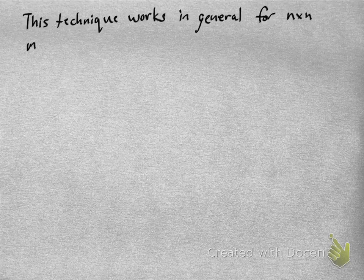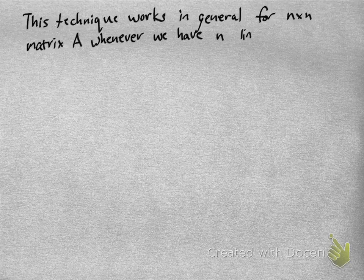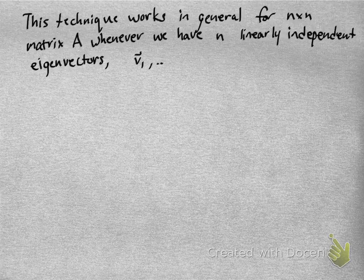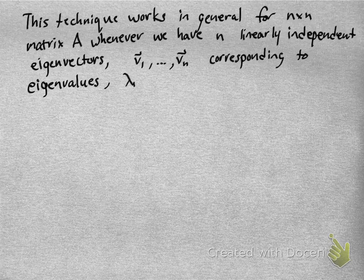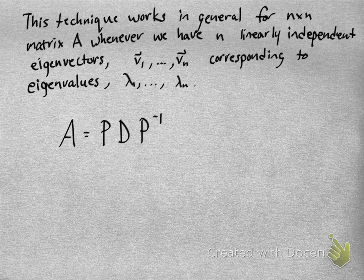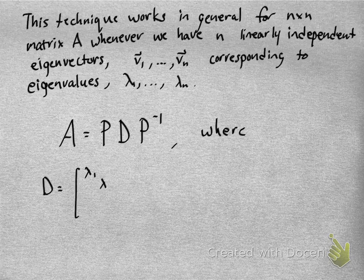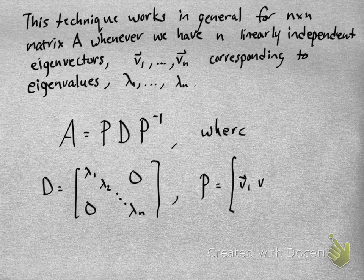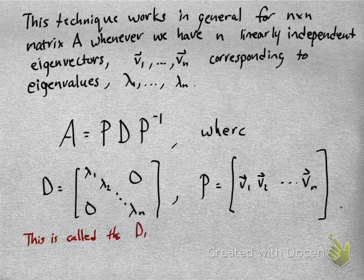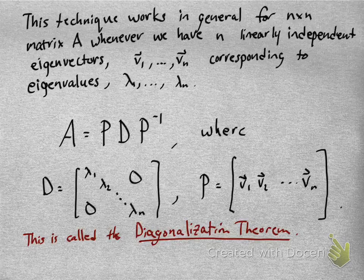This technique works in general for any n by n matrix A whenever we have n linearly independent eigenvectors. If the eigenvectors are V1 up to Vn with eigenvalues lambda 1 up to lambda n, we're going to be able to write A as P times D times P inverse, where D is this diagonal matrix whose main diagonal entries are the eigenvalues, and P is the invertible matrix gotten by taking those linearly independent eigenvectors as columns. This is called the diagonalization theorem — a matrix is diagonalizable, i.e., similar to a diagonal matrix, if and only if we can find a basis of n linearly independent eigenvectors for an n by n matrix.